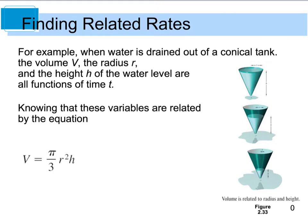In a classic calc example, we look at water being drained out of a conical tank, and we're looking at the volume, the radius, and the height of the water level. All of these are connected because they're all functions of time. As time elapses and the water drains out, the volume, the radius, and the height level are all changing.